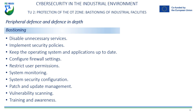Restricting user permissions: it is advisable to limit user permissions to prevent users from accessing resources or sensitive information they do not need to perform their tasks. In general, implementing hardening techniques helps reduce the risk of system security being compromised and minimizes the impact of a successful attack.